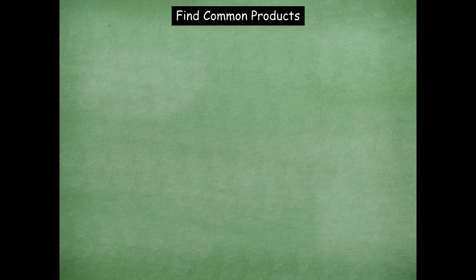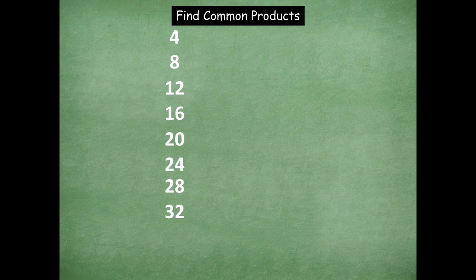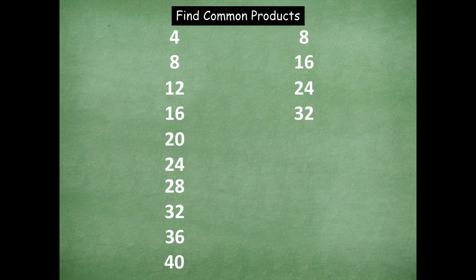Let's see if we have the same thing. On the left hand side you would have four, eight, 12, 16, 20, 24, 28, 32, 36, and 40. The products of eight on the right hand side would be eight, 16, 24, 32, 40, 48, 56, 64, 72, and 80.